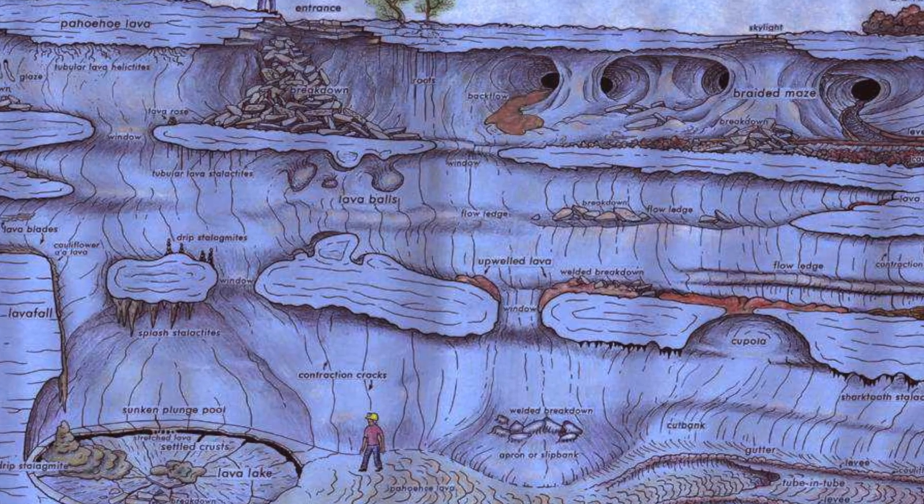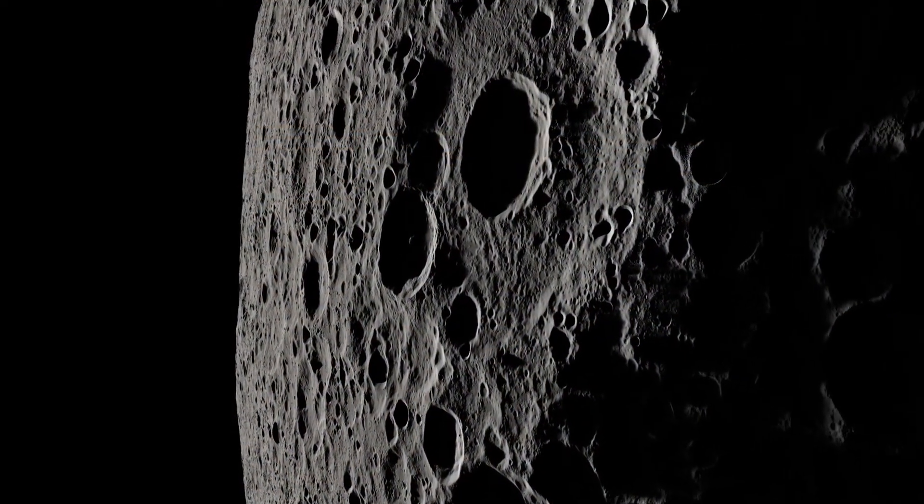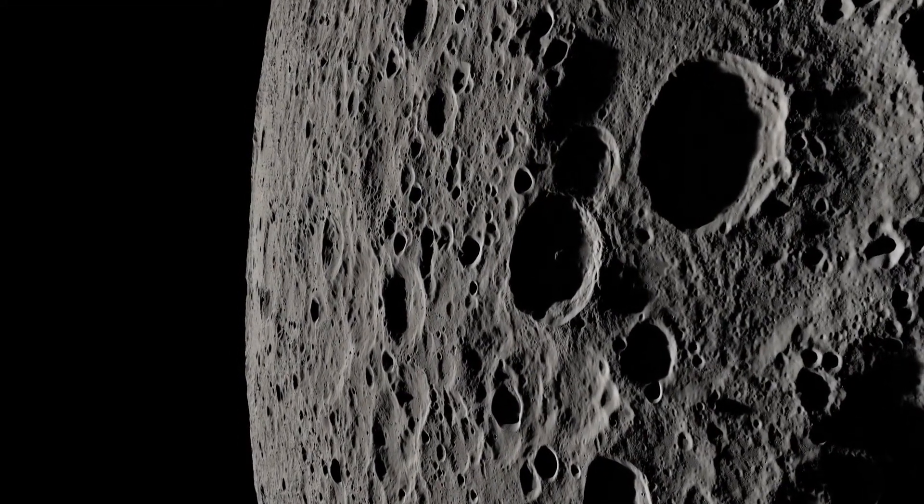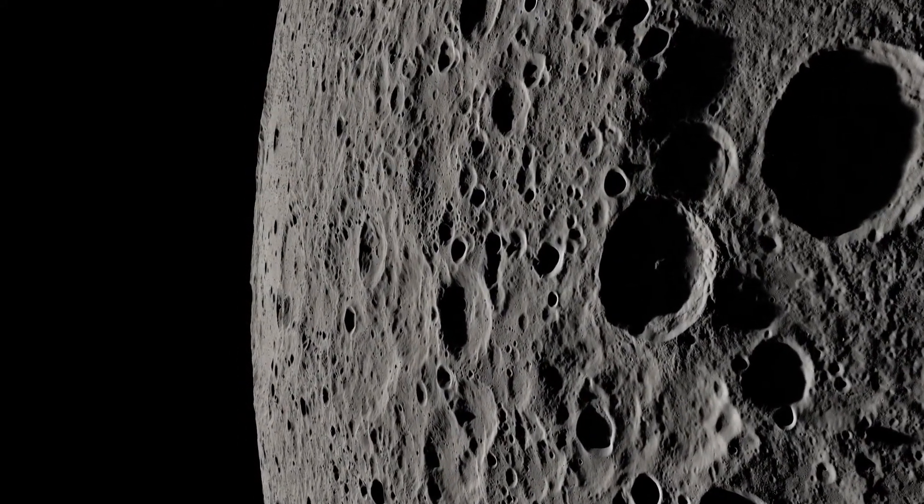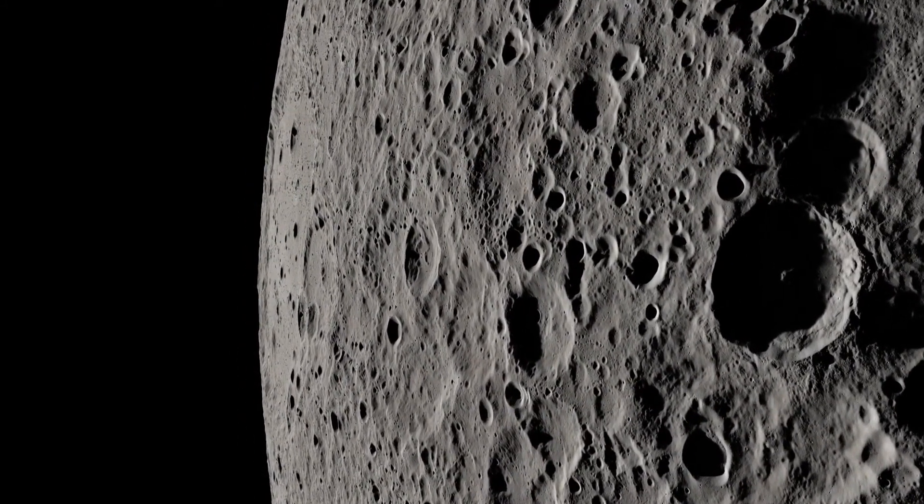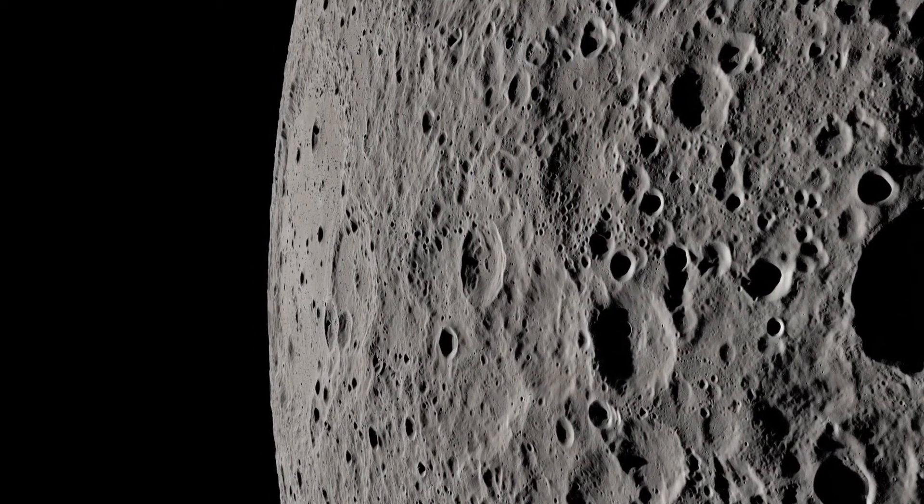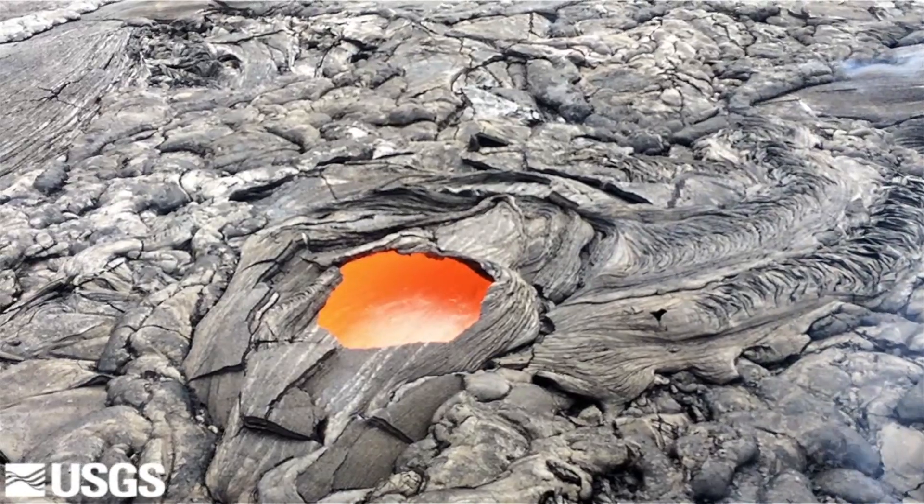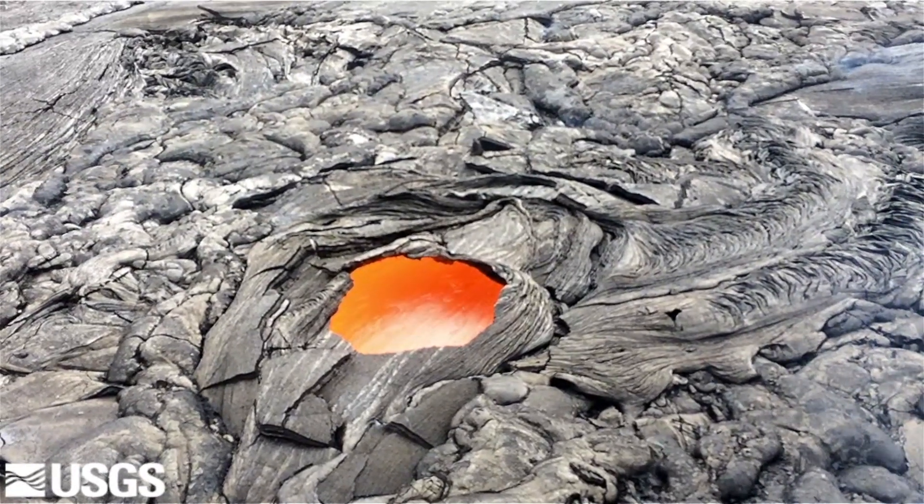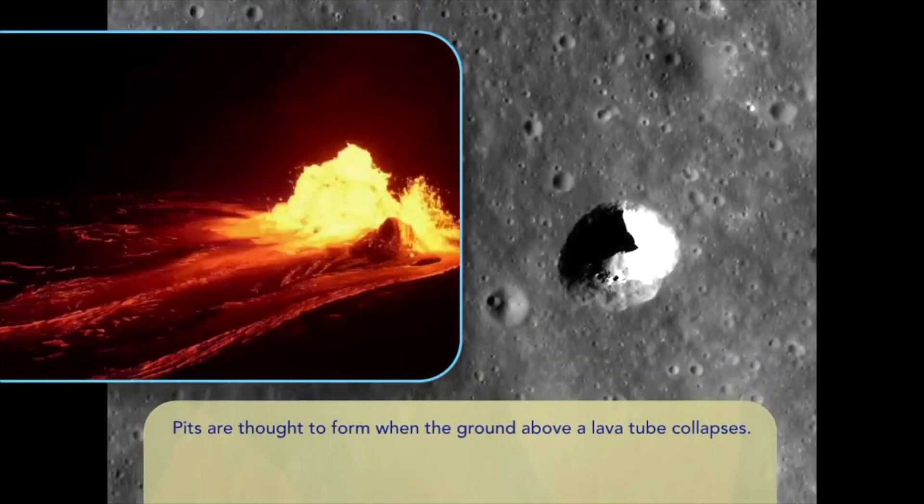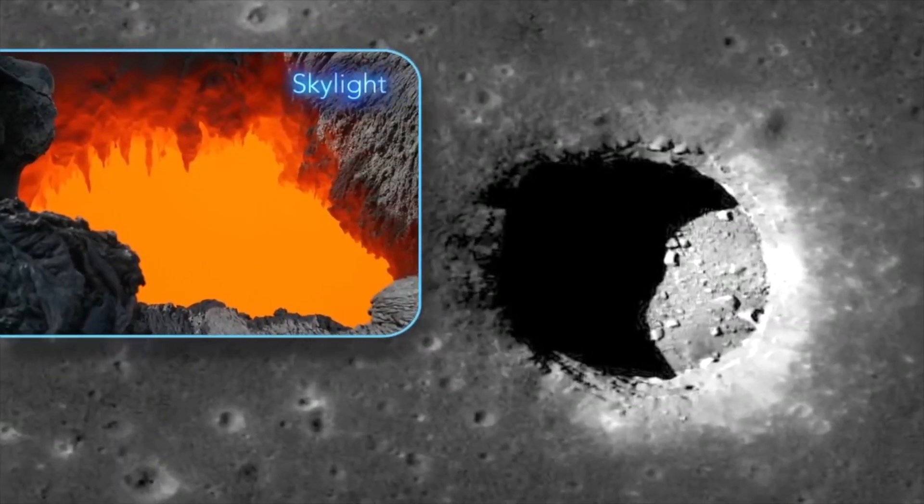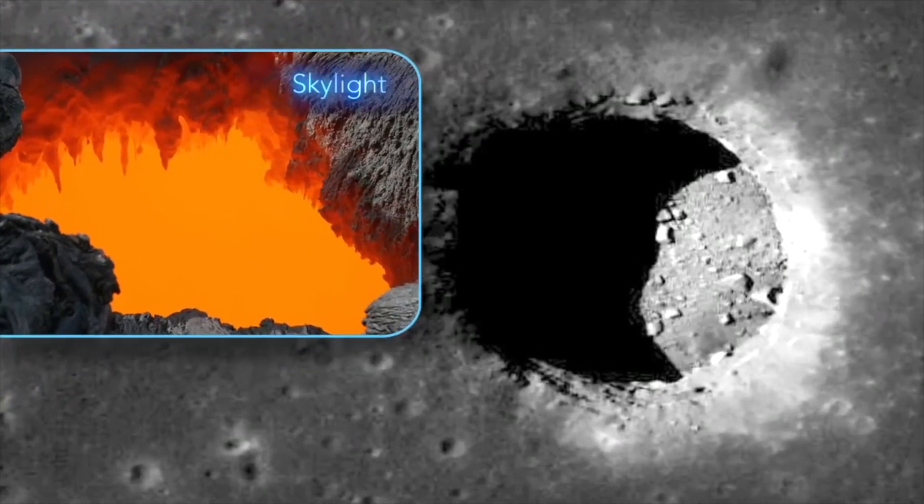Because lava tubes are buried deep underground, they can be hard to find. So, how can a spacecraft orbiting the Moon find them? There's one telltale sign that a lava tube exists under the surface: skylights. Skylights are openings created when a section of the roof of a lava tube collapses, revealing the cave underneath and creating an entrance into the tube system.